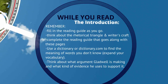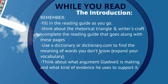You'll have some tasks to do while we read as well. You're going to first need to make sure that you fill in the reading guide as you go — it's really hard to do it after the fact because you've got to know the page numbers and actually find the things while you're reading. Think about the rhetorical triangle and writer's craft, which means thinking about the interaction between the author Malcolm Gladwell, the audience, and the subject matter. Also use a dictionary or dictionary.com to find the meaning of words you don't know — most studies say encountering new words in your reading is the number one way of expanding your vocabulary. Finally, think about what argument Gladwell is making and what kind of evidence he uses to support it.